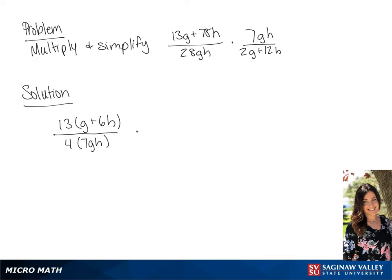In the second fraction we are going to factor the denominator. So we will have 2 times (g plus 6h).